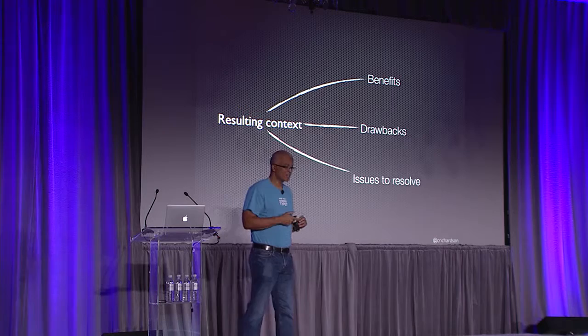Applying a pattern gives you a resulting context with consequences — benefits where some forces are resolved, some forces left unresolved, and new problems introduced that must also be addressed. Then there are related patterns: alternatives that solve the same problem, or patterns that solve problems introduced by applying this pattern. So just by framing things as a pattern, we're explicitly describing the drawbacks and listing issues you have to resolve — giving us a rational framework for technology choices.